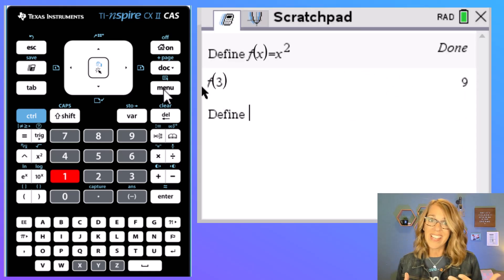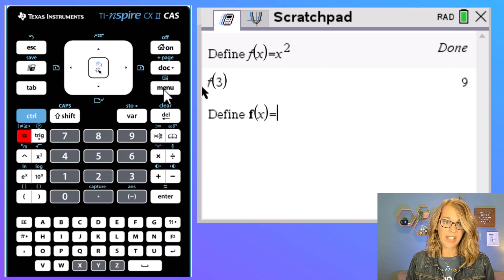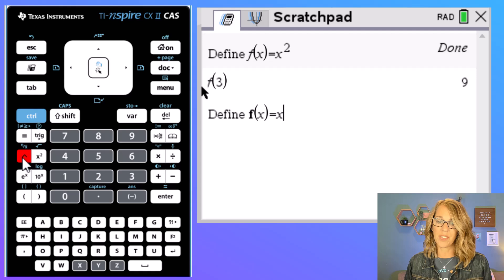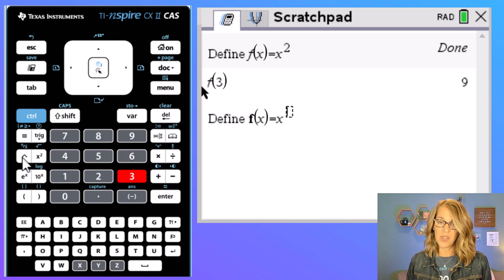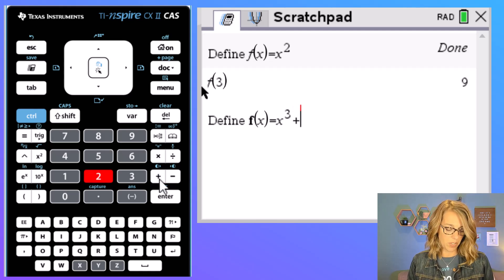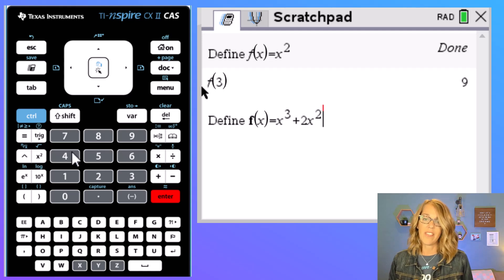I'm going to define a different function here. Let's do f of x is equal to, let's do x cubed this time. So I'm going to type the letter x and then I'm looking for that caret which is over here by x squared and I'm going to do x cubed and let's do plus 2x squared. So 2x and then I hit my squared button and then we'll hit enter.